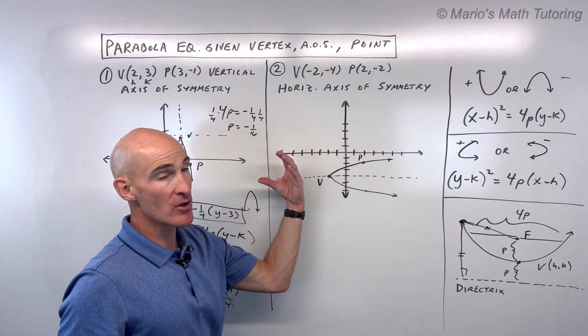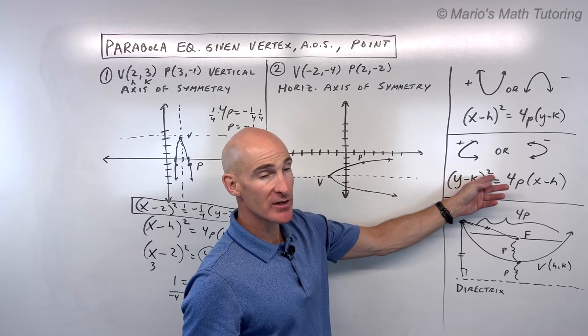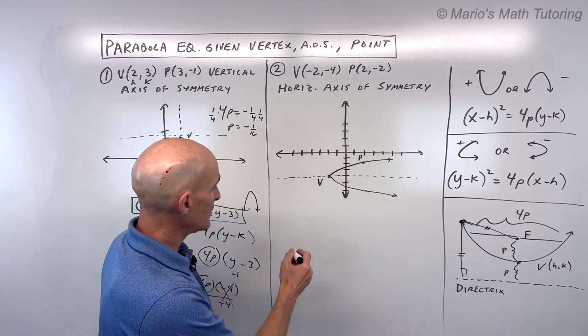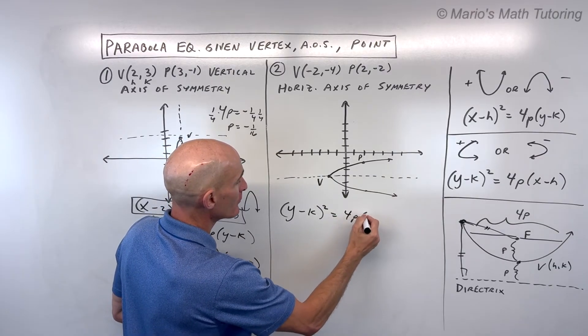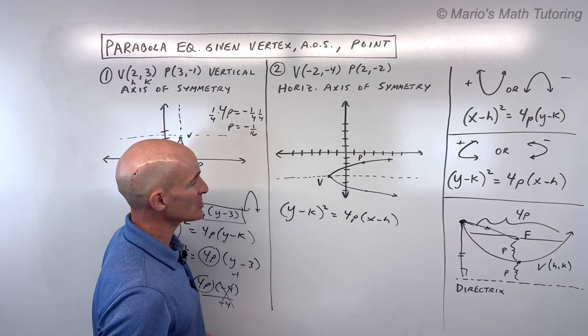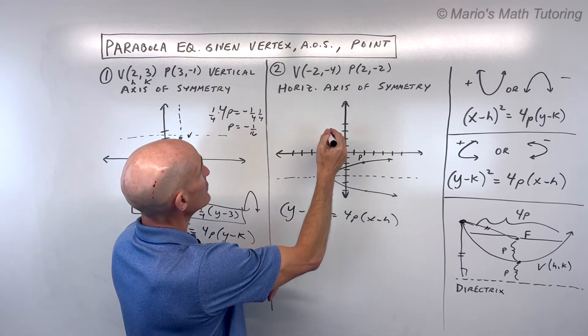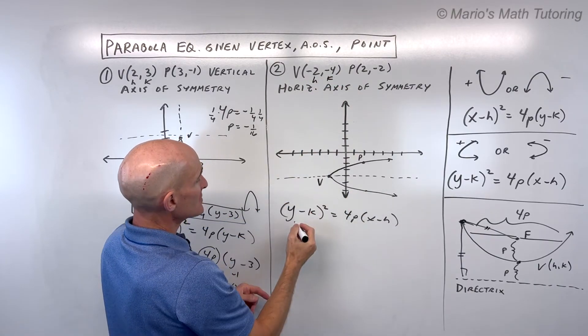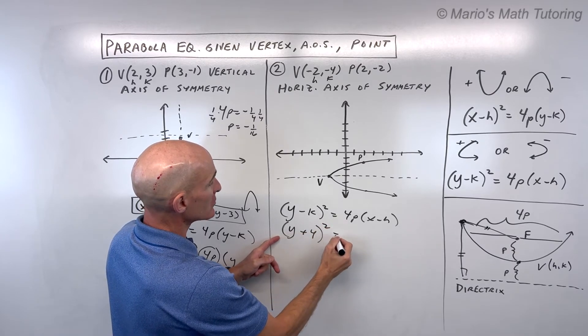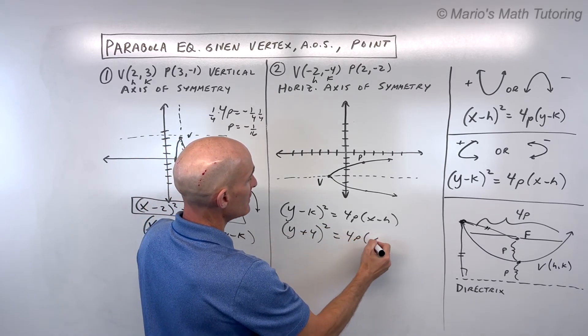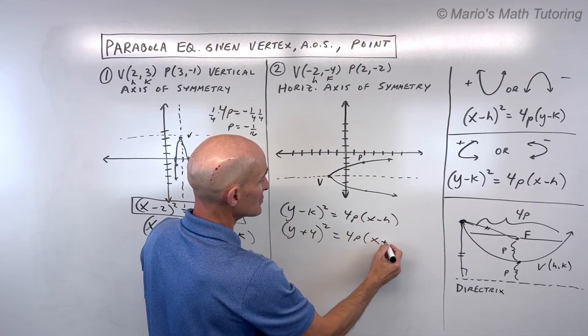okay, and when it opens to the right or the left, we know it's a y squared type. So it's going to be in this form, let's write this down, (y-k)² = 4P(x-h). h, k is the vertex, so this is going to be y minus negative 4, which is like y plus 4 squared, equals 4P x minus negative 2, which is x plus 2.